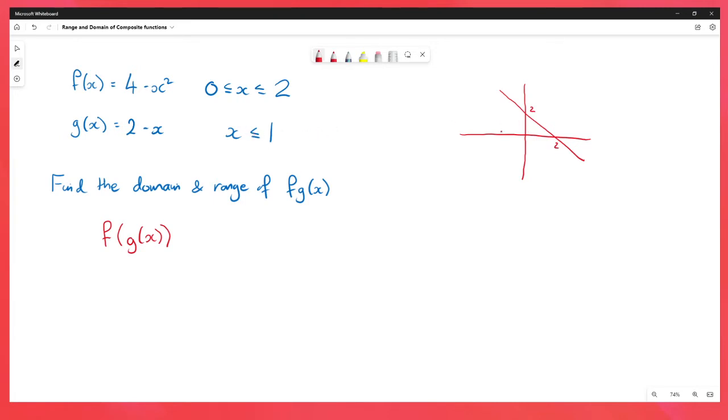We've got 2 minus x which sort of looks like this, and we want x to be less than or equal to 1. So we don't care about this bit. So our range is going to be the y values when x is less than or equal to 1, which is going to be, if we look at where the graph is, this set of things here.